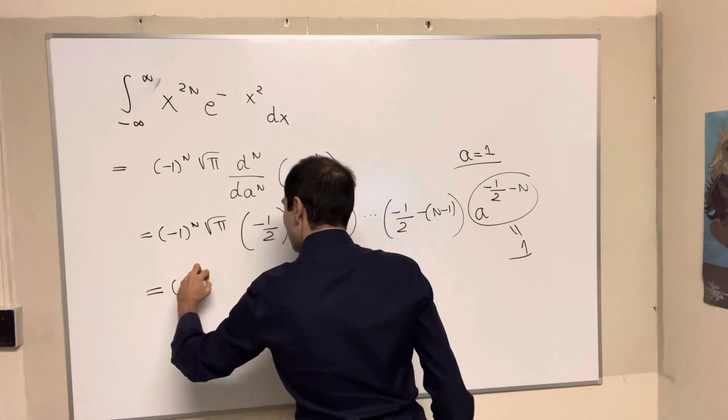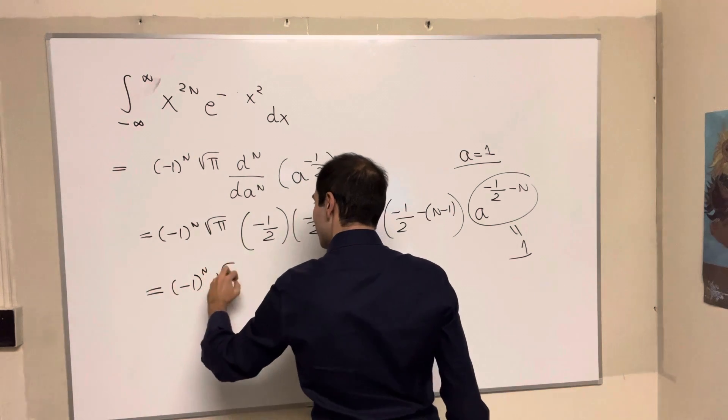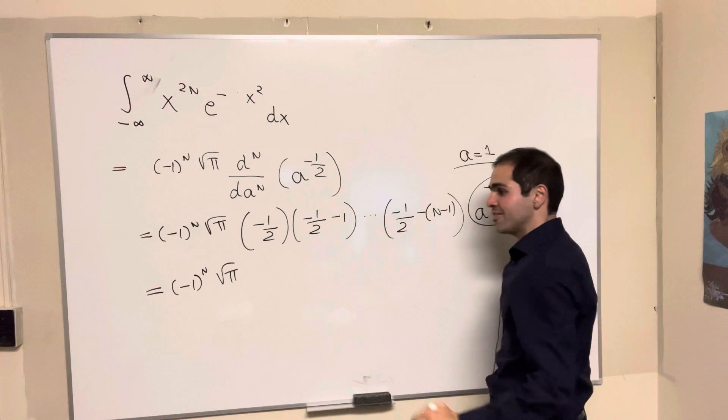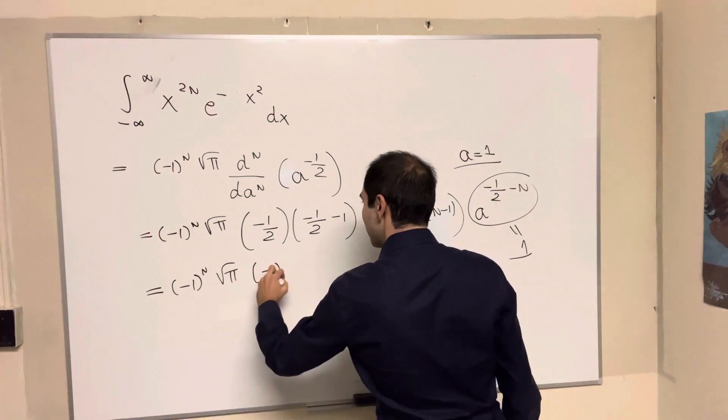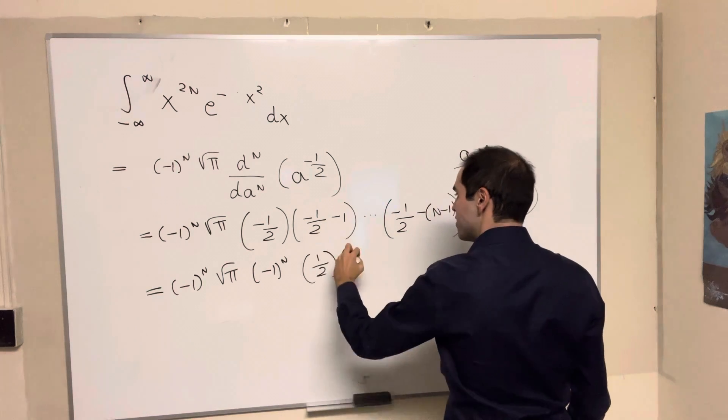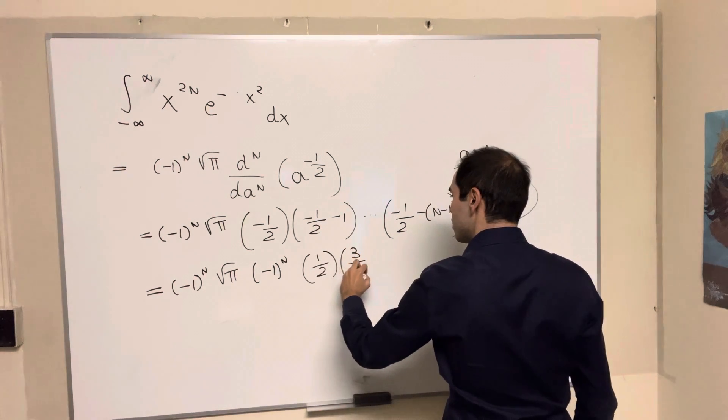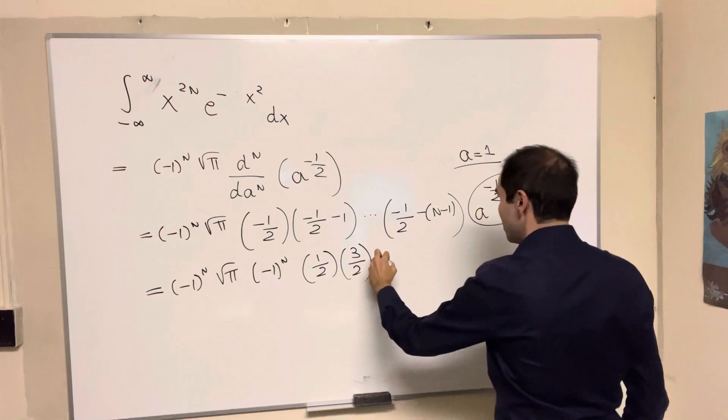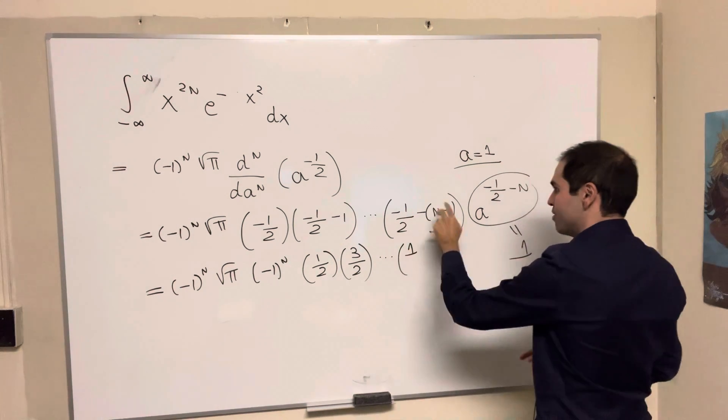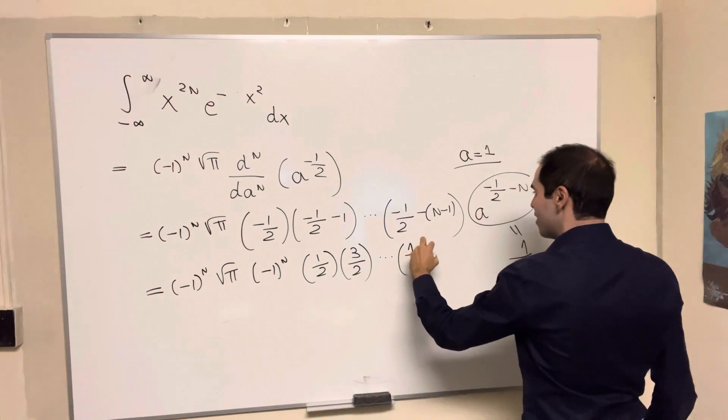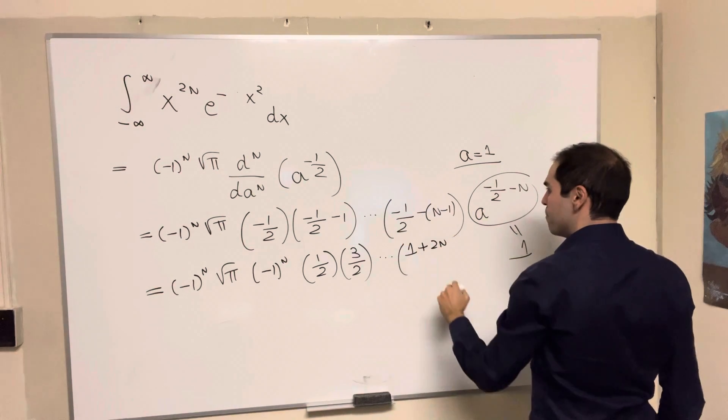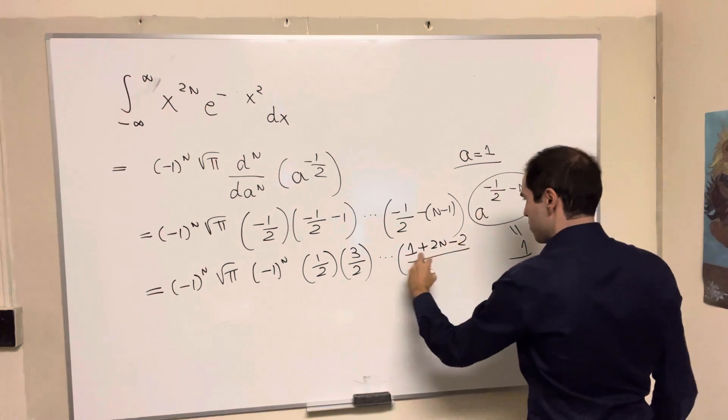But this is not too bad. So minus 1 to the n square root of pi. So here we have n negative signs, so another minus 1 to the n. And then we get 1 half, this is 3 halves, and then I think 5 halves, 7 halves, et cetera, until 1. And here, the signs get flipped a little bit. 1 plus 2n, and then minus 2 over 2.